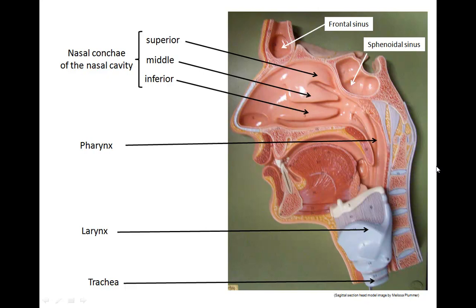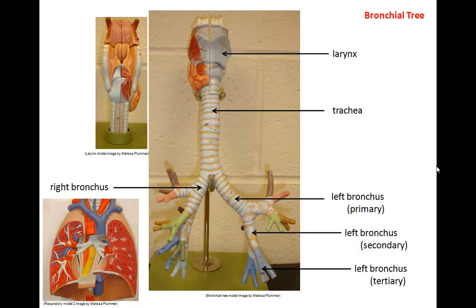The air now makes its way through the pharynx into the larynx and down the trachea. The trachea is supported by cartilaginous C-shaped rings. As shown in the inset picture to the upper left, the cartilage rings are not complete. The trachea branches into the left bronchus and the right bronchus. The bronchi within the lungs branch and branch, as seen in the inset picture to the lower left. The bronchial tree is made up of primary bronchi that branch into secondary bronchi, which branch further into tertiary bronchi.